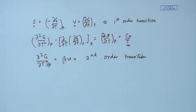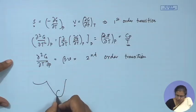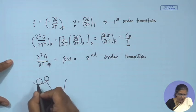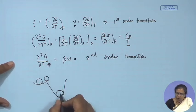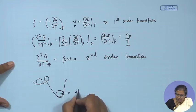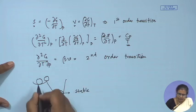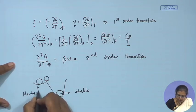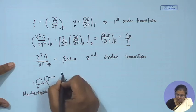In thermodynamics we deal with equilibrium states, and all of these refer to stable equilibrium states. Recalling from mechanics, we have the typical diagram where one state refers to stable equilibrium, another to unstable equilibrium, and another to metastable equilibrium. For most cases we deal with stable equilibrium states, while phase transitions refer to metastable equilibrium states.